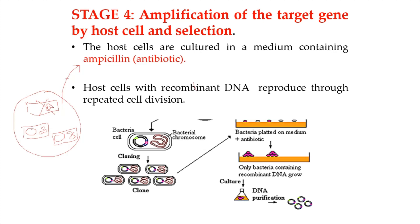Meanwhile, host cells that take up the plasmid will survive. Host cells with recombinant DNA reproduce through repeated cell division, forming a clone of cells. Because the dividing host cells replicate the recombinant plasmid and pass it on to their descendants, the foreign DNA and any genes it carries are cloned at the same time.